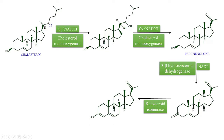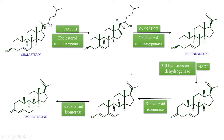Again in the presence of ketosteroid isomerase, the double bond at position 5 and 6 is eliminated, and the double bond shifts from position 5–6 to position 4–5. The hydroxyl is converted to a ketonic group, and this moiety is called progesterone.